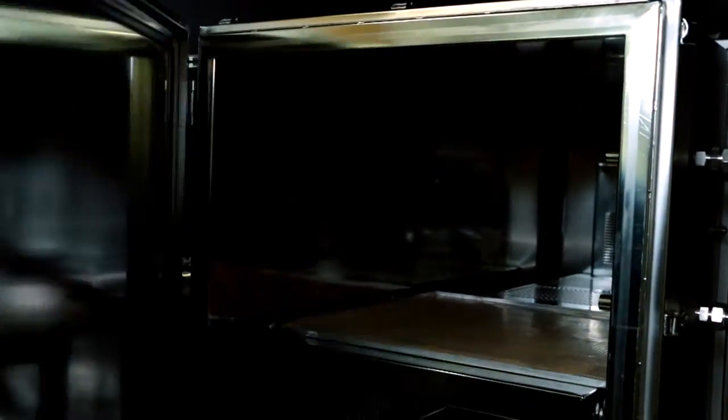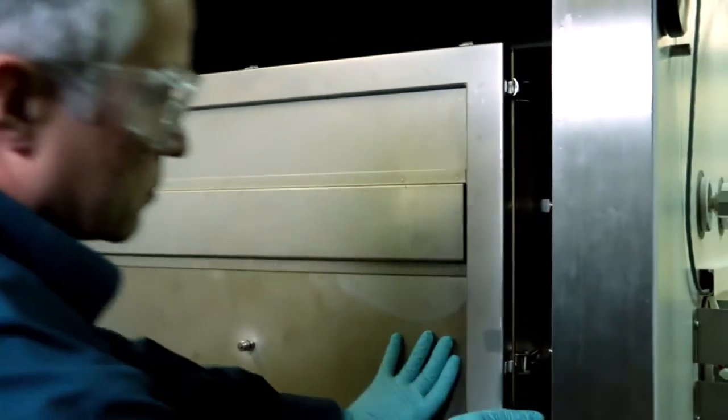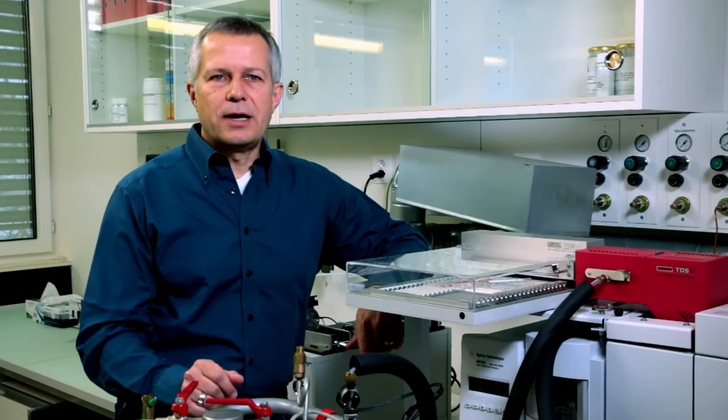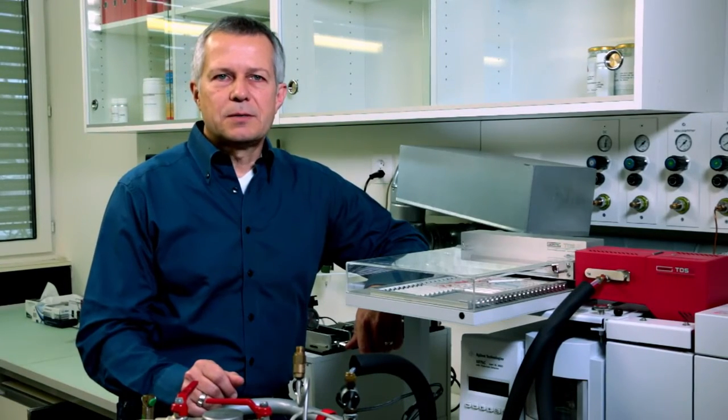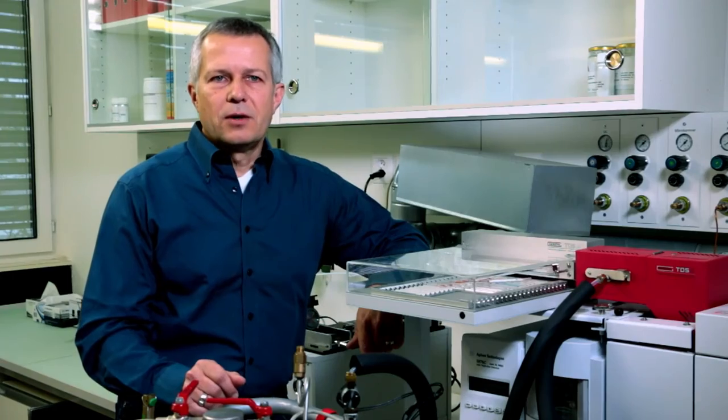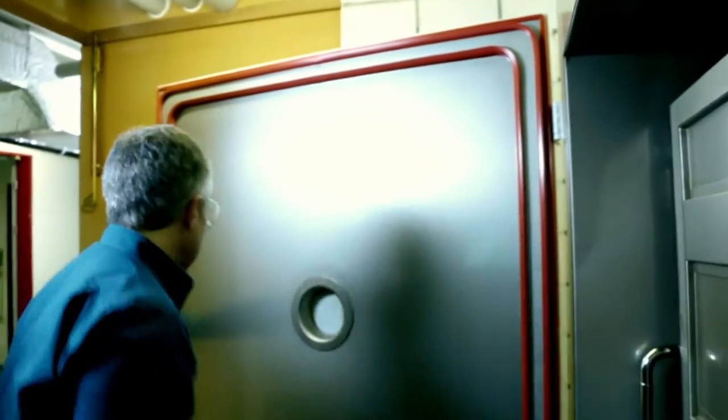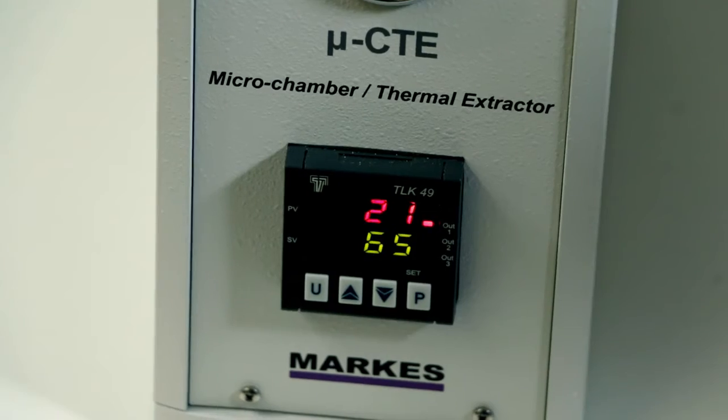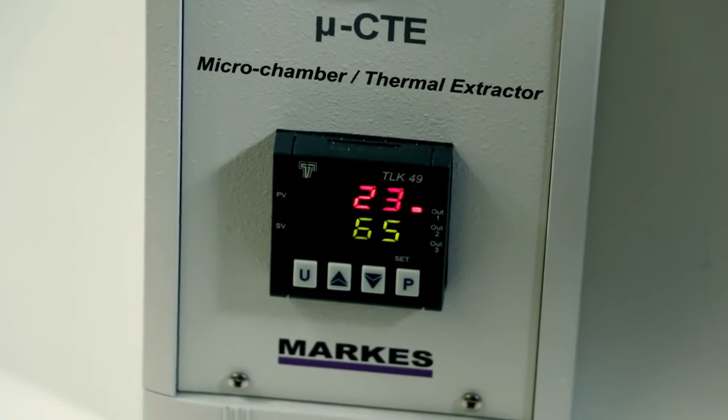We have two testing devices with which we can cover most analytical methods. The big emission test chamber serves for indoor air measurements. The sample is placed in the big steel chamber which is one cubic meter in size. The chamber is supposed to simulate a sealed room. The temperature, humidity, and air exchange rate are precisely regulated.